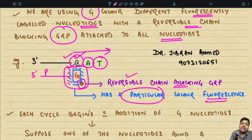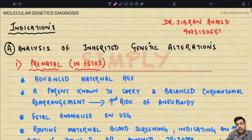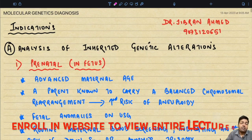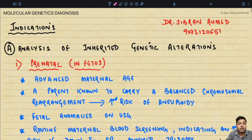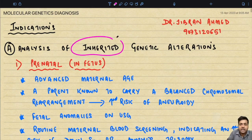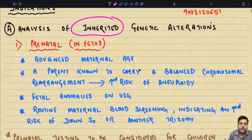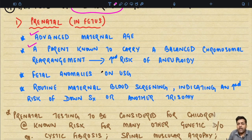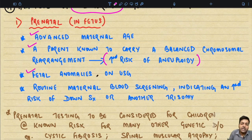I'm Dr. Gibran Amad presenting Simply Pathology. Today we are going to read about molecular genetics diagnosis, and we are mainly going to discuss about the sequencing techniques including next generation sequencing. What are the indications of molecular genetic diagnosis? Number one: analysis of inherited genetic alterations — for example, in prenatal or in fetus cases where the mother has an advanced age.